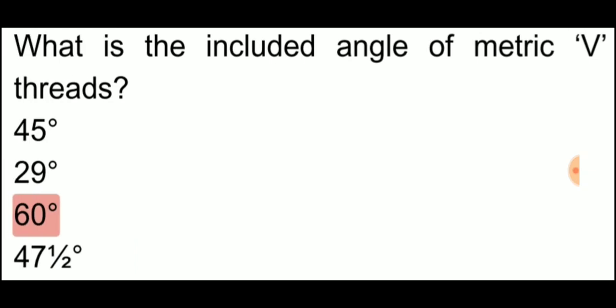What is the included angle of metric V threads? We just saw acme thread which is 29 degree. If V thread is asked, metric V thread, its included angle will be 60 degree.